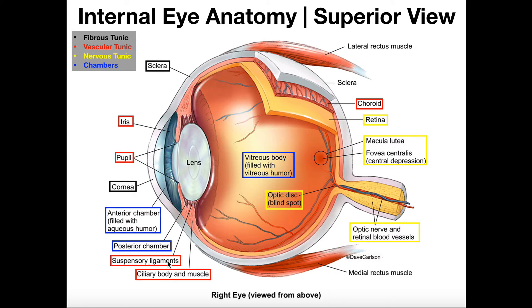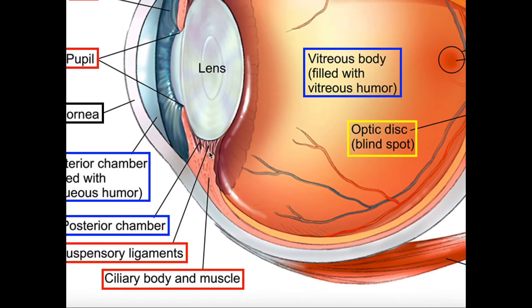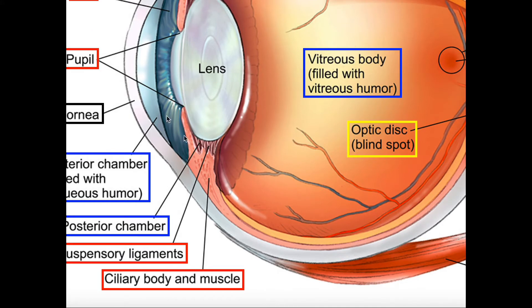There are some other things here: we have suspensory ligaments and a ciliary body, which are down here surrounding the lens. The lens is not technically part of any tunic. The lens is a gelatinous structure that sits directly behind the iris, and it can actually change shape to focus light differently on the retina. The way the lens changes shape is through the action of the ciliary body. The ciliary body exists circumferentially around the lens — we're just looking at a cross-section here. The suspensory ligaments connect the lens indirectly to the ciliary body.